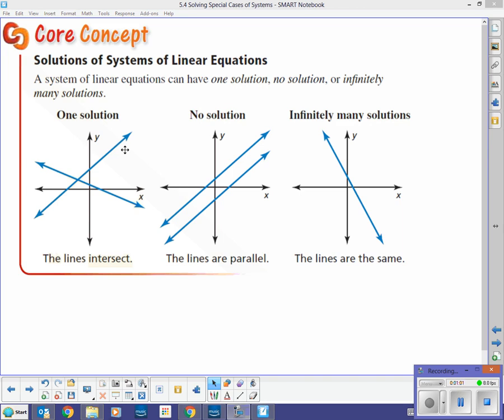Here's our answers already for us. It can have one solution. Now this is what we've been working on so far by the graphing method, the substitution method, and the elimination method. One solution - one single point of intersection, and that would be our single solution there.